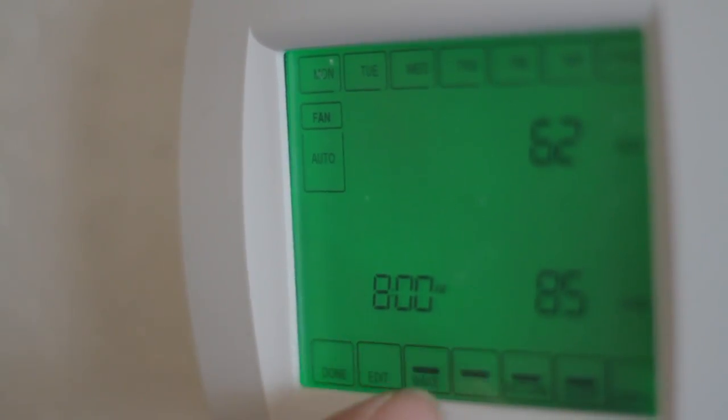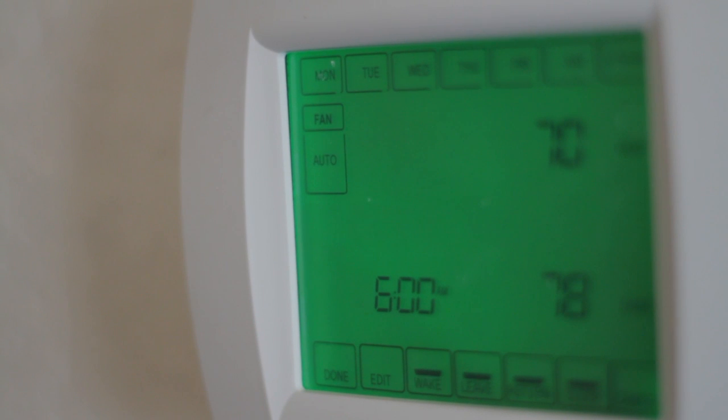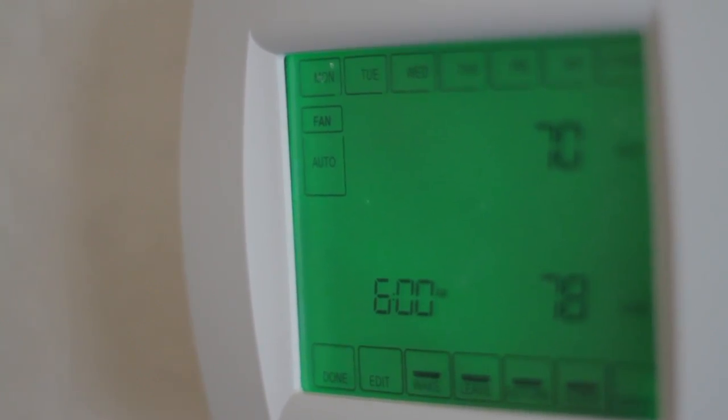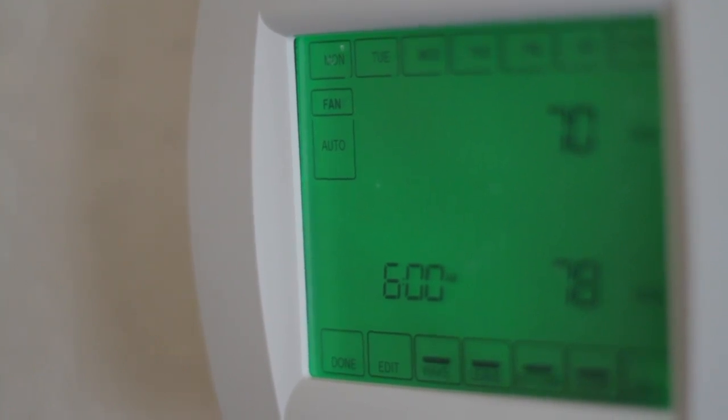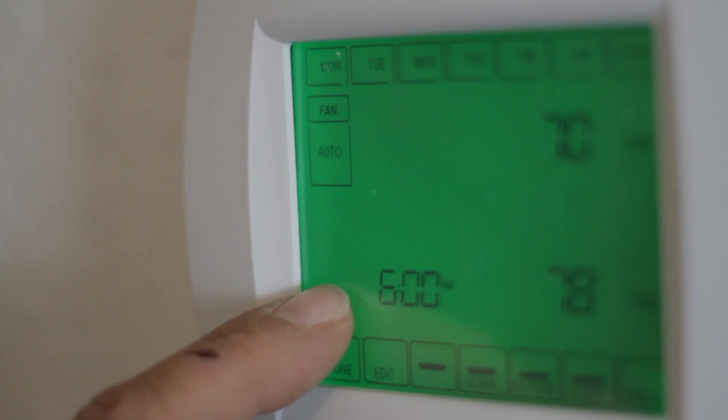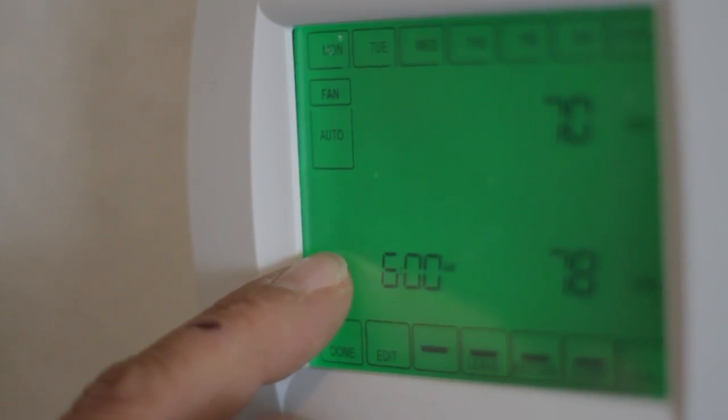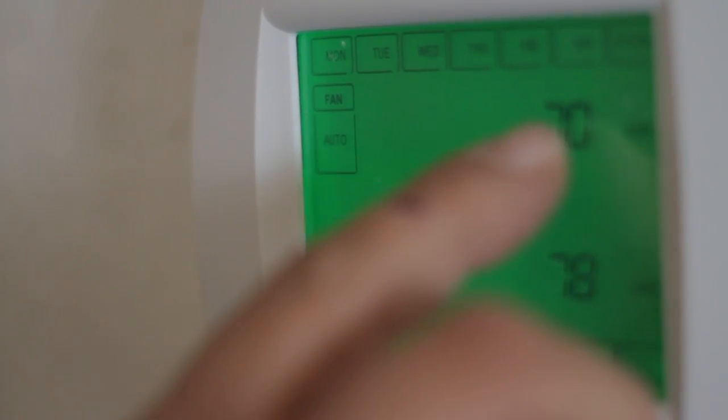Now at the very bottom down here, the first time that we're going to go through is the wake time. So that means when you're waking up in the morning, what time do you want the house to start heating up at? You've got a temperature setting, so you can go through 6 a.m. and change these temperatures for your heat schedule.